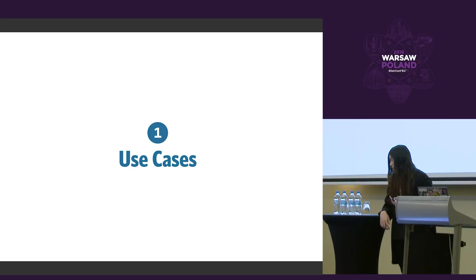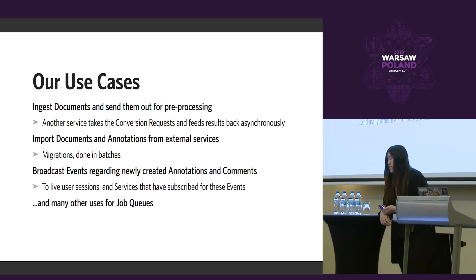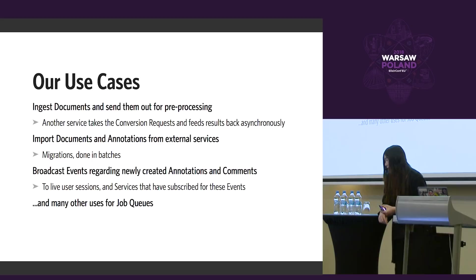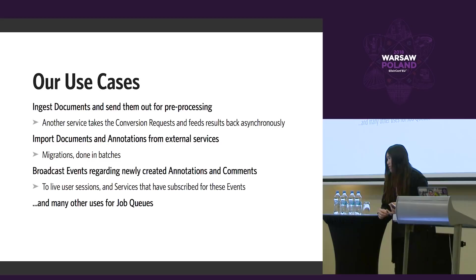On the use cases: we have at least a couple of Elixir applications. The primary one is a document system. When documents are uploaded for the first time, they have to be processed, because a binary blob needs to be introspected to find the correct type and then processed accordingly. Sending a document to all processors at once to see which returns a result is not practical. Another use case is dealing with migrations or ingestion of data from other sources — potentially thousands to millions of documents — so we need an ingestion queue rather than running synchronously.